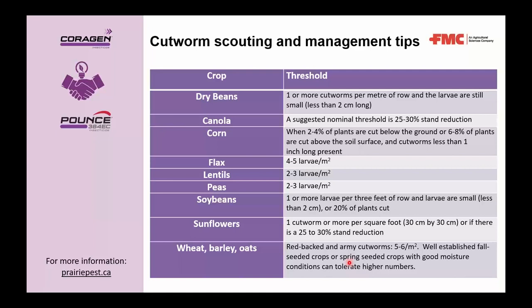Thresholds have been established for some but not all cutworm species. The CANOLAG Canada cutworm guide from the Prairie Pest Monitoring Network is a wonderful resource. When thinking about commodity prices and economic thresholds, consider crop species: crops with lower physiological ability to fill in plant stand gaps — like sunflowers or dry beans — have much lower tolerance for feeding than canola, wheat, barley, or oats.